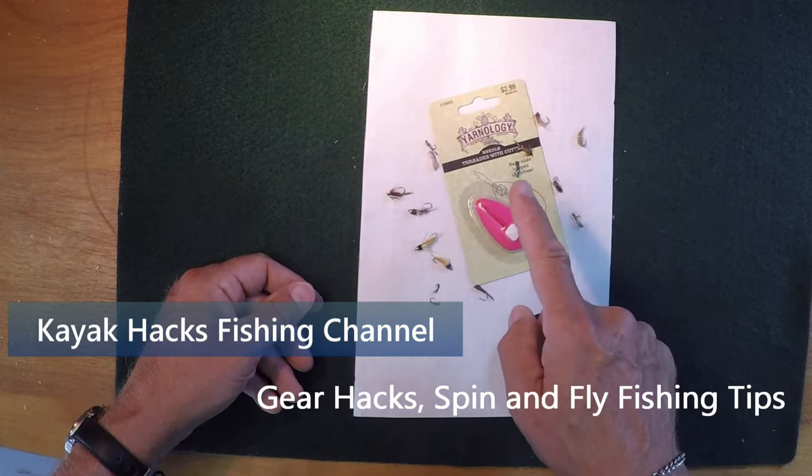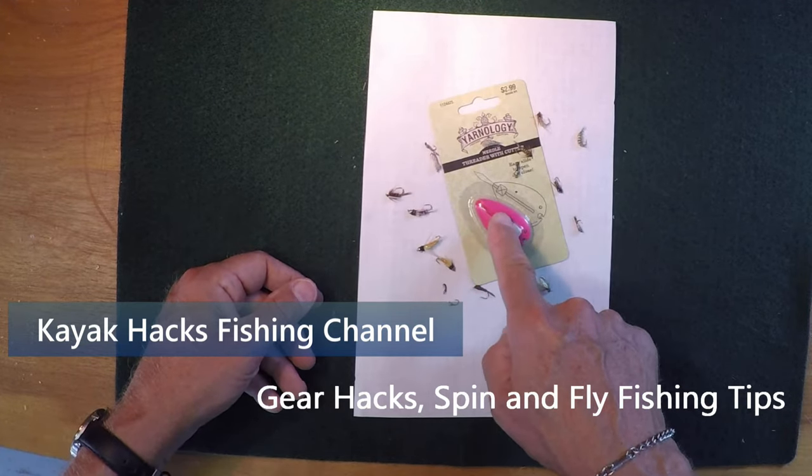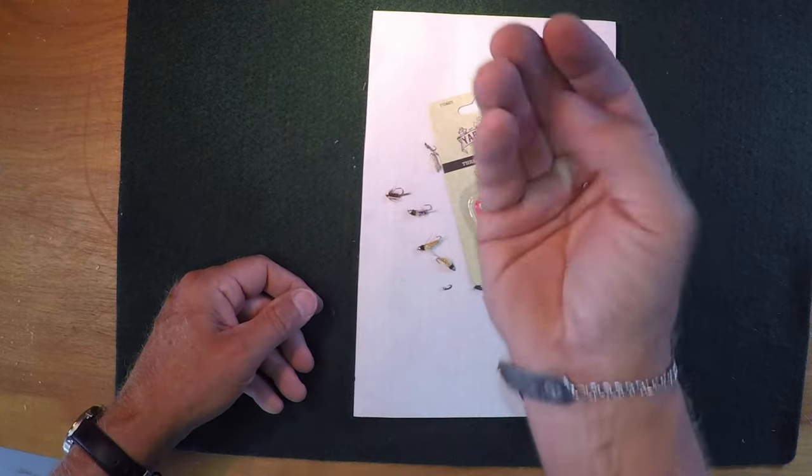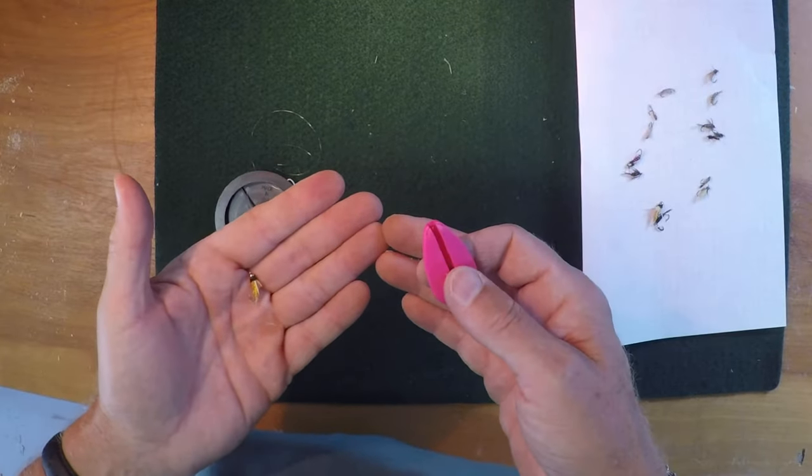I'm going to see if this Yarnology needle threader will help me string 6x tippet through flies as small as size 20. Let's see if this idea is any good.